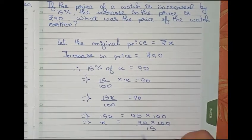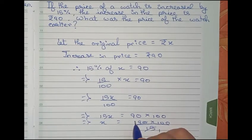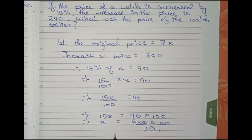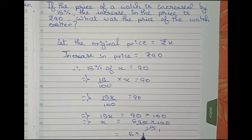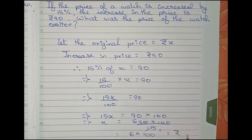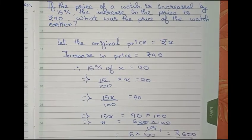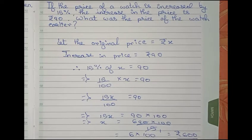So now you can cut 15 and 90 directly; it becomes 6. So it becomes 6 into 100. So that is equal to rupees 600. Rupees 600 is our final answer for this question.